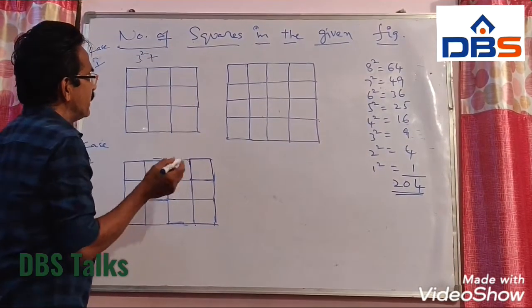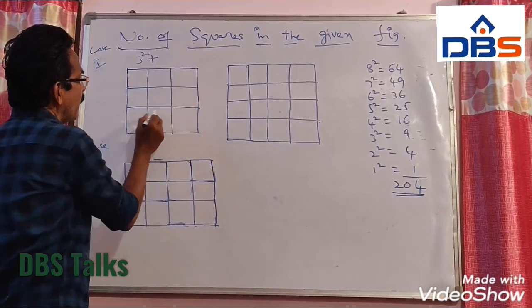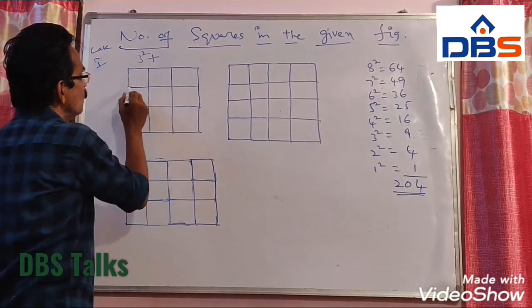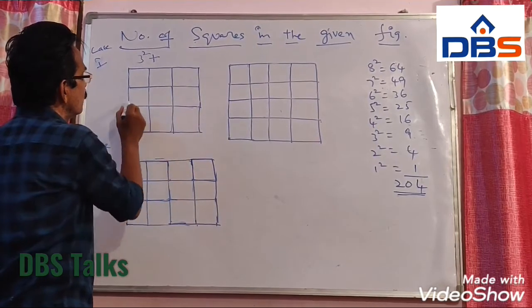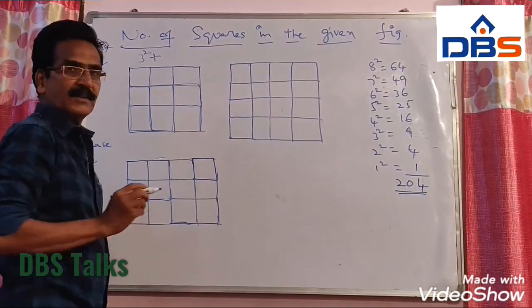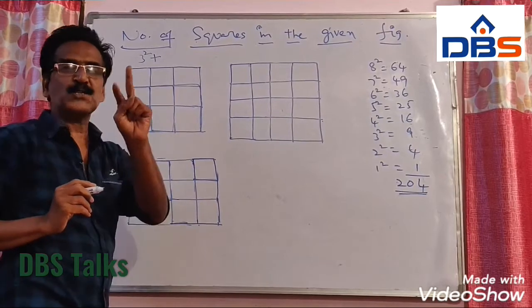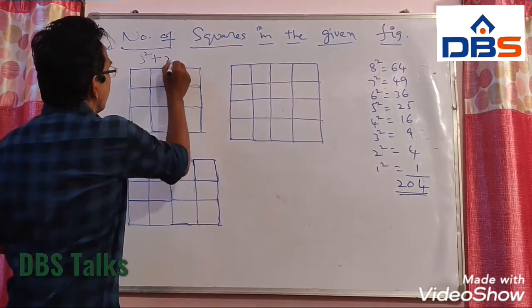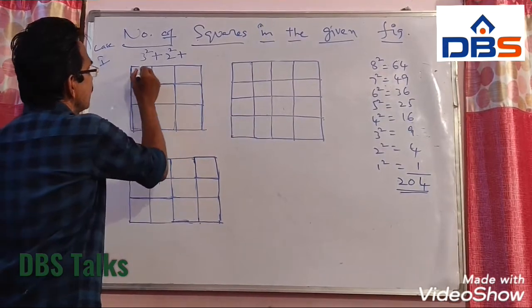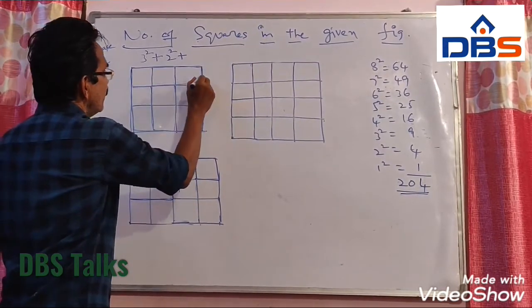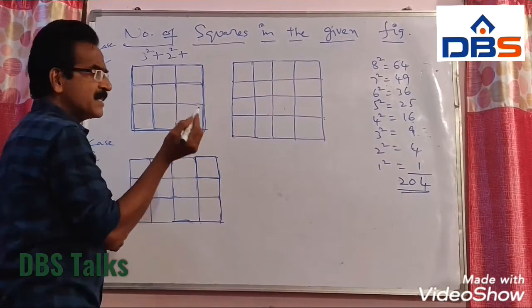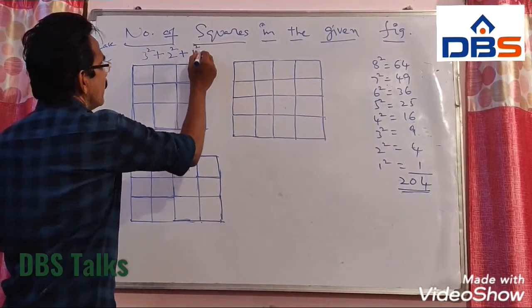Now let us see the next bigger one: 1, 2, 3, 4 — that is 2 squared. Next, the next bigger one is this one — only one such bigger square is there, that is 1 squared.